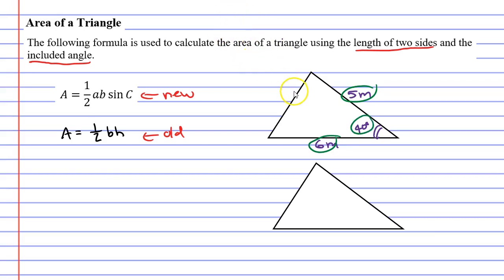Now with this information where we know the length of the two sides and the size of the included angle, we can use that and plug it into our formula, our new formula, and we can calculate the area of the triangle.